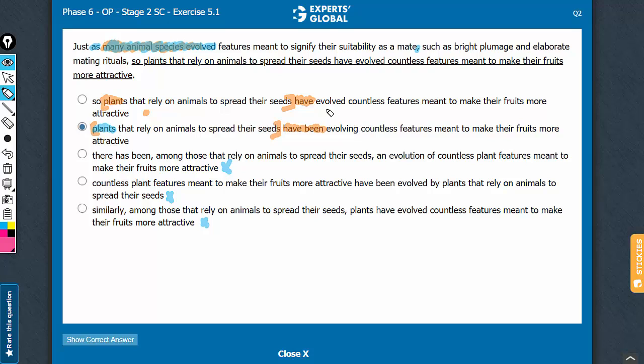So while the evolution may still be on, meaning-wise, the comparison is with features that the fruits have already evolved. So the usage of present perfect tense is better than present perfect continuous tense. Present perfect continuous would be correct for an action that started in past and continues into present. Since the nature of information is about comparison between features which have already evolved, present perfect tense is better.